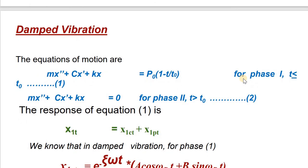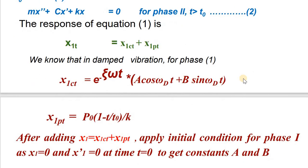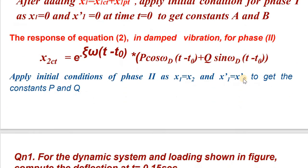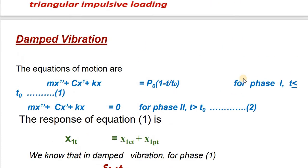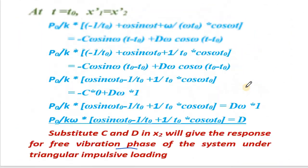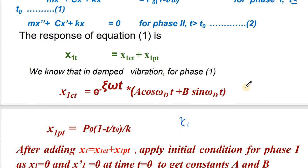For the damped triangular load case, the complementary solution for phase 1 is: x1_ct equals e raised to minus ζωt times (a cos(ωdt) plus b sin(ωdt)), and the particular solution is p0(1 minus t/t0)/k. For phase 2, there is no particular integral since there is no load. By applying boundary conditions you can find a, b for phase 1 and then the complete response. I will give this derivation as an assignment.